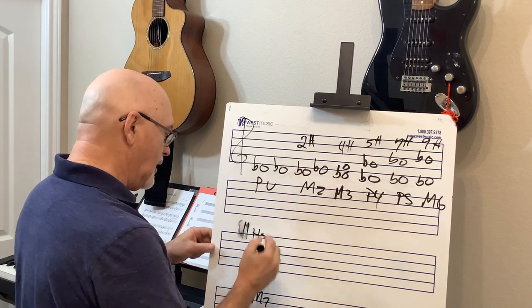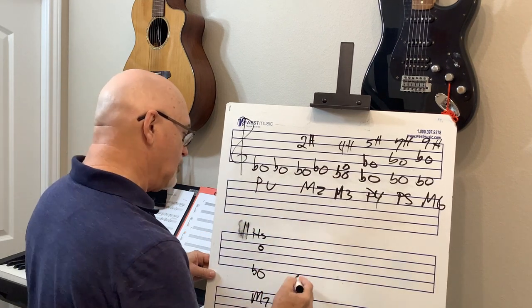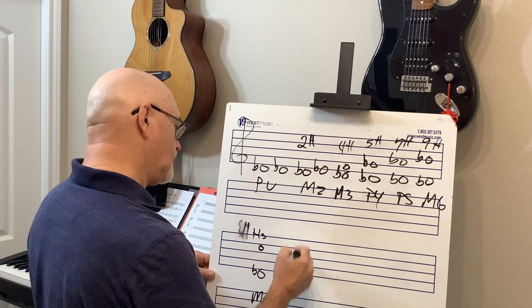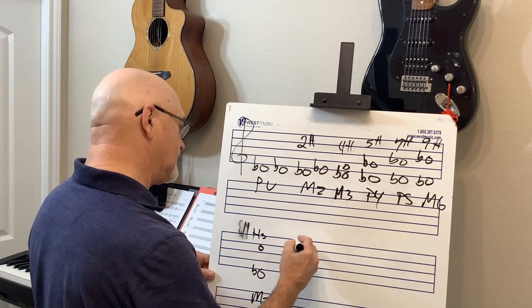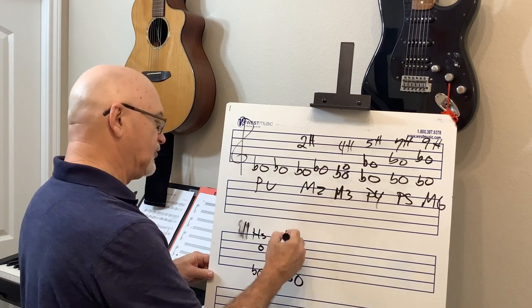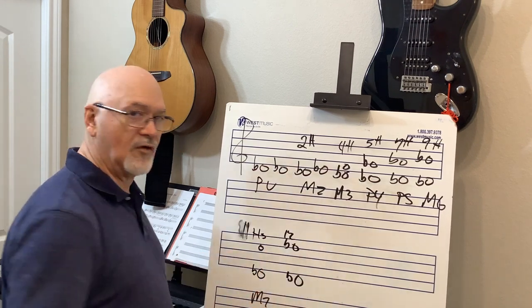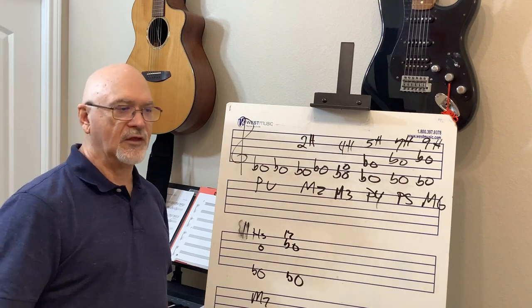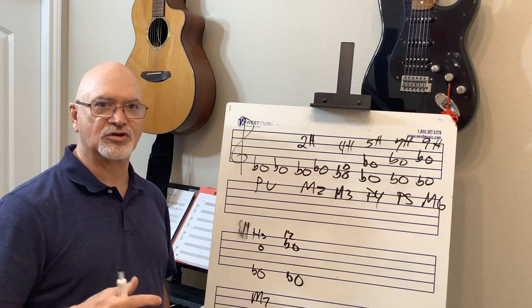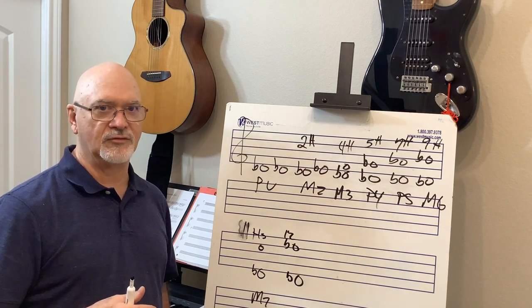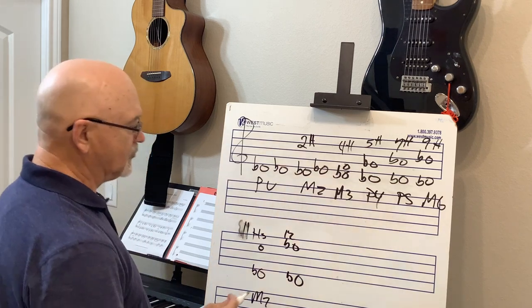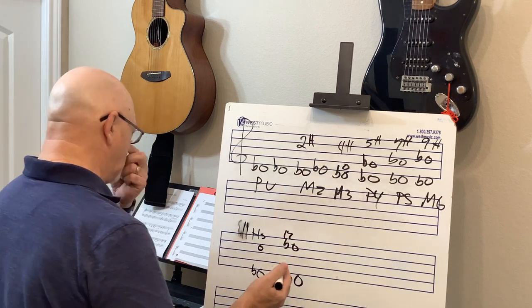And then the octave — D-flat to D-flat — is twelve half steps, or as they call it in British terminology, twelve semitones.